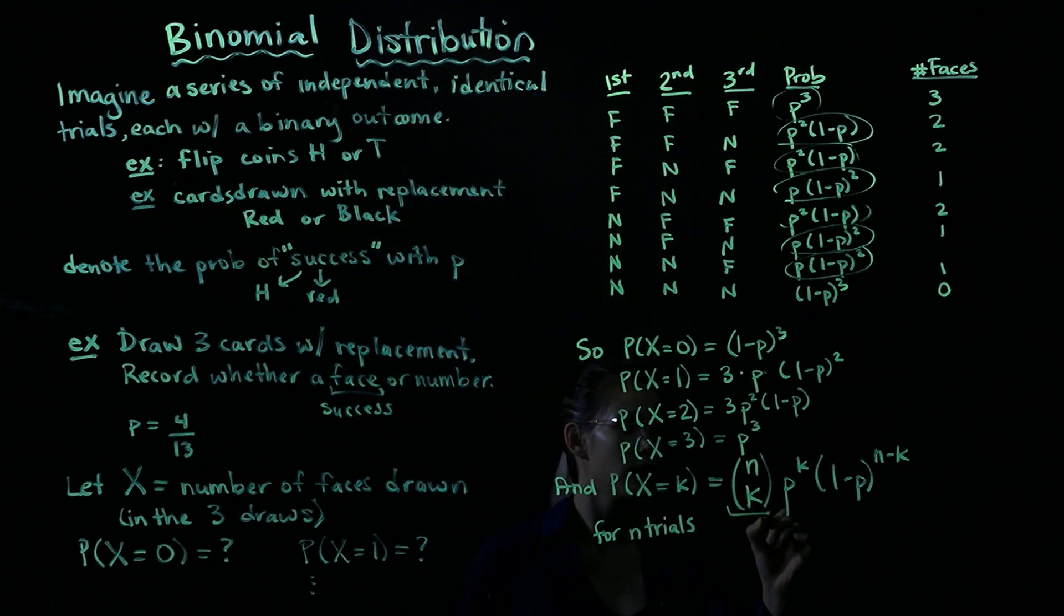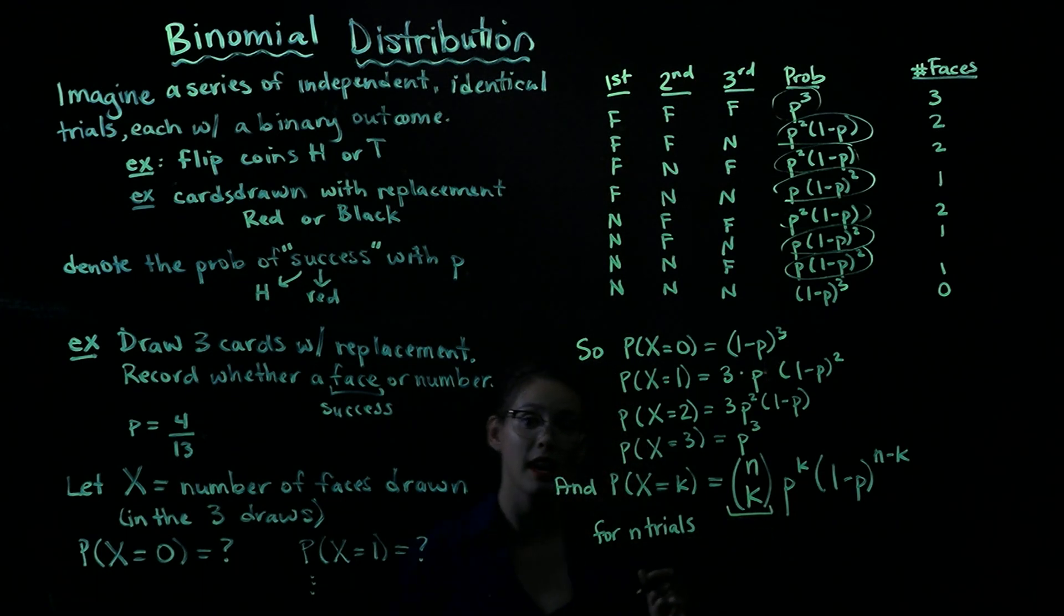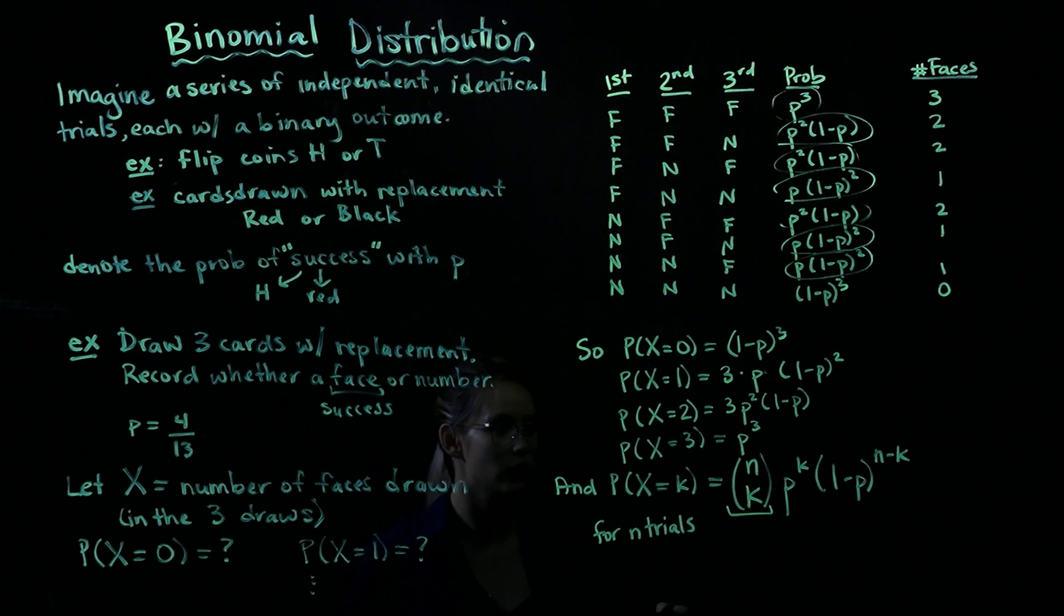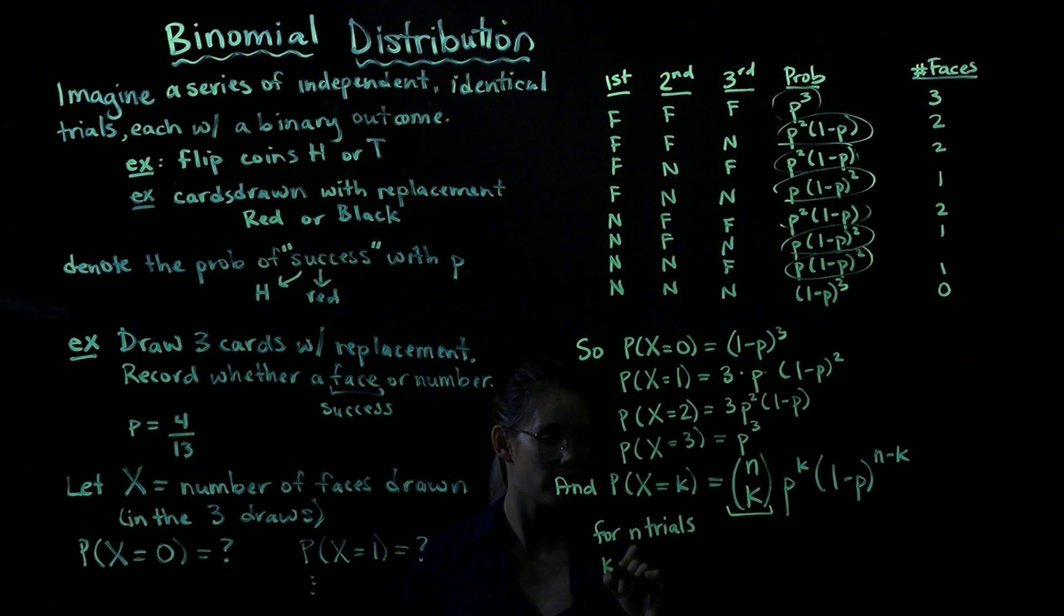So n choose K, this is all the different ways that we could get K successes out of n trials. All right, next piece, K successes out of n trials. That's what this is saying.